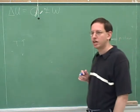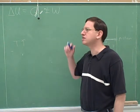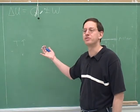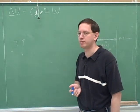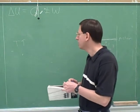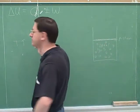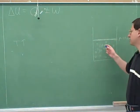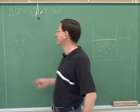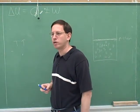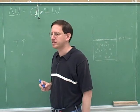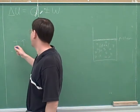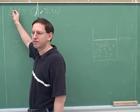Increasing temperature means increasing the kinetic energy of the molecules, so they're moving faster. For an ideal gas, the only energy is kinetic energy. That means there's a very close relationship between T and delta U. If we increase the temperature, we would expect that to increase the energy.